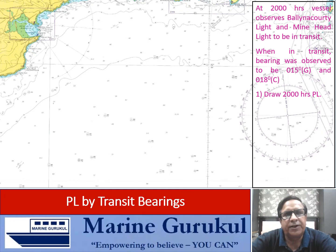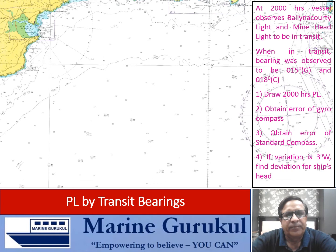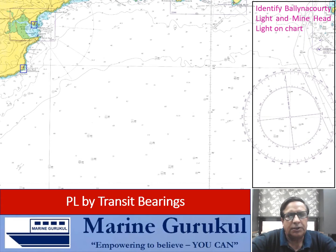Draw the 2000 hours position line and obtain the error of the gyro compass and the standard compass error. If variation is 3 degrees west, find the deviation for the ship's head. First, let us identify the Balina Coty light and the Mine Head light on the chart. This one is Mine Head light and this one is Balina Coty light.